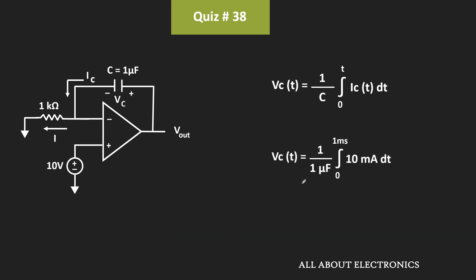That means in this case, Vc equals 1 divided by 1μF times 10mA times t, with limits from 0 to 1ms.